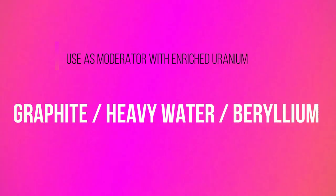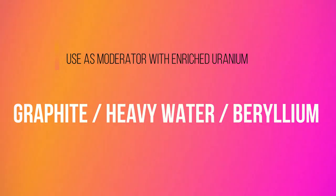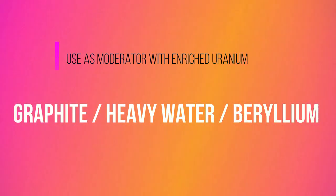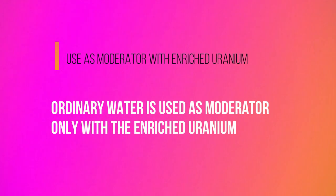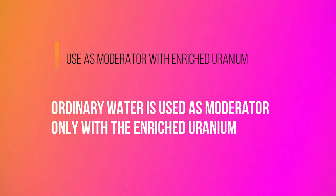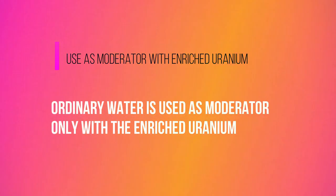The slowing down of neutrons is effectively done by light elements like H2, D2, O2, carbon, and beryllium. Graphite, heavy water, or beryllium can be used as moderator with natural uranium. Ordinary water is used as moderator only with enriched uranium.